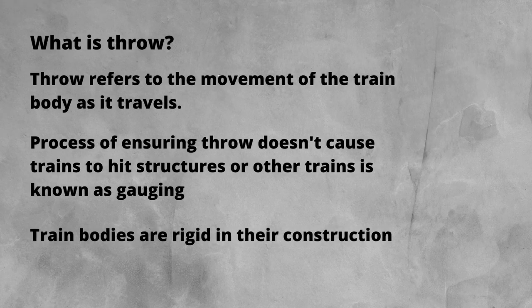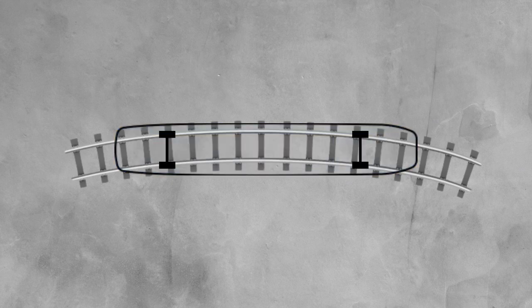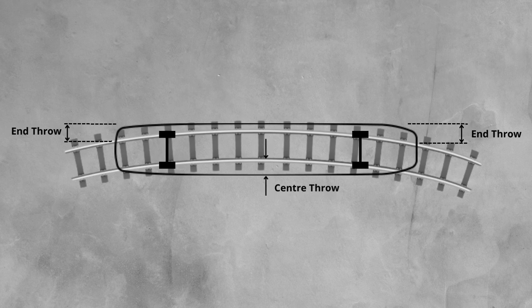Let's look at this with a train body on a curve. I have marked the wheelsets, or bogies, on this train's body outline. You can see that the front and rear of the train body projects past the rails more than it normally would on a straight piece of track. This is end throw, and it occurs at both ends of the train. If we look at the centre of the train on the inside of the curve, the body again overhangs the track, and it's greatest at the middle of the two wheelsets. This is centre throw.